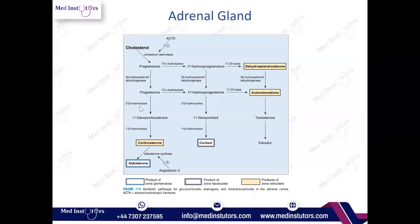In patients with 21-beta-hydroxylase deficiency, since the enzyme cannot process progesterone further, the body cannot make aldosterone — there would be a deficiency of aldosterone. Similarly, looking at the cortisol synthesis sequence: if a patient has alpha-beta-hydroxylase deficiency, there would be no cortisol. And if a patient has 21-beta-hydroxylase deficiency, they also cannot produce cortisol, since 21-beta-hydroxylase plays a role in that pathway as well.